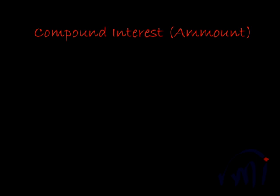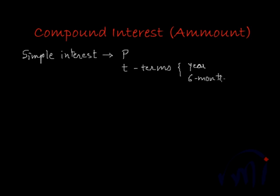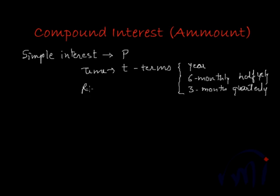What is the difference between simple interest and compound interest? In simple interest, interest is always calculated on the principal amount. Suppose you have taken P amount as a loan for a period of T terms — these terms can be yearly, half-yearly, or quarterly. T is the number of terms, and R is the rate of interest, R percent per term, meaning for every 100 rupees or dollars, you pay R rupees or dollars every term.